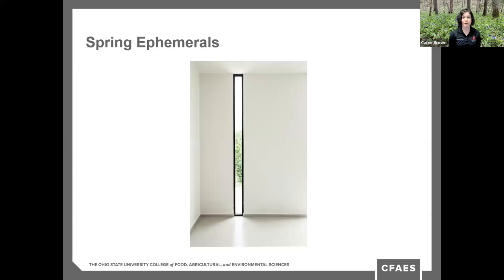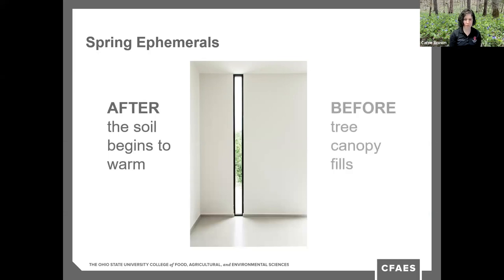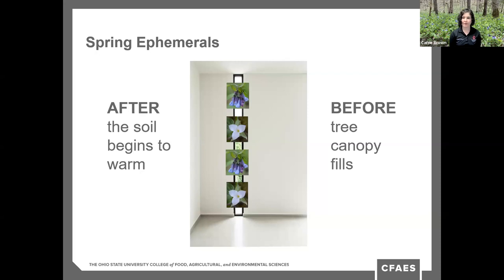Spring ephemerals are unique because they occupy a very narrow blooming window — a time after the soil begins to warm, but before the tree canopy fills. Because of this lack of tree canopy, at least 50 percent of the sunlight is reaching the forest floor. This will decrease considerably beginning in mid-May as trees and shrubs leaf out, hence the term ephemeral. These plants have figured out a way to fill this niche when it is a hard time to be a plant, and as a result they have creative adaptations that allow them to grow when other plants are still dormant.